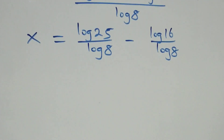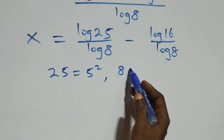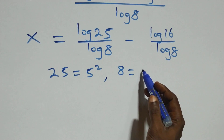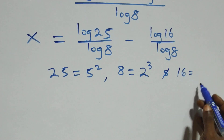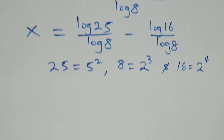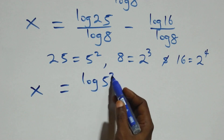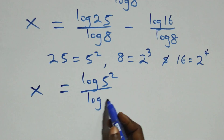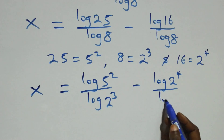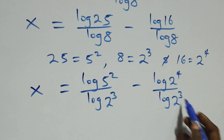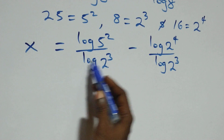From what we have here, we can express 25 as 5 times 5, that is 5 squared; and 8 as 2 times 2 times 2, that is 2 raised to power 3; then 16 as 2 times 2 times 2 times 2, which is 2 raised to power 4. So what we have becomes x equals log(5²) over log(2³) minus log(2⁴) over log(2³).